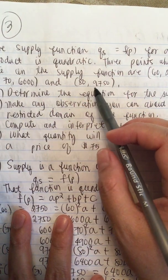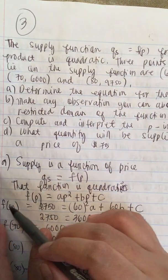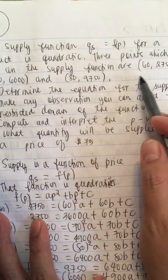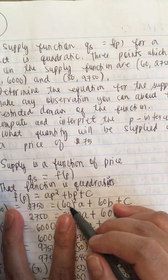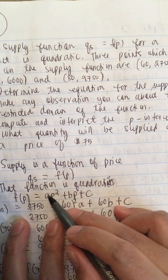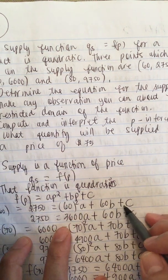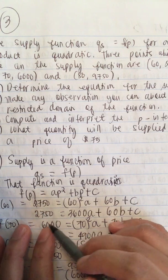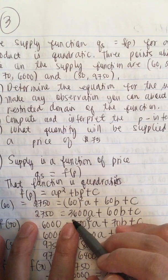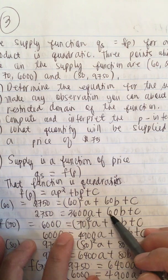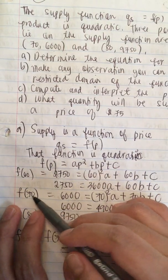They give us three points to find the quadratic equation. So f of 60 equals 2750, which gives us: 60 squared times a plus 60b plus c, and 60 times 60 is 3600, so 3600a plus 60b plus c equals 2750.